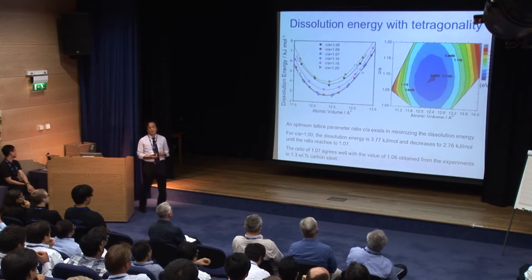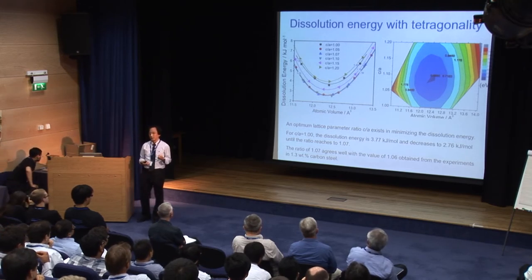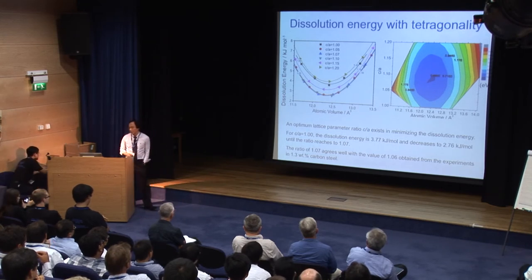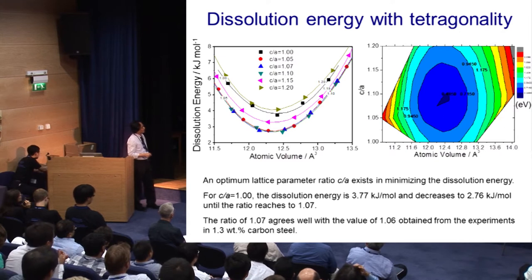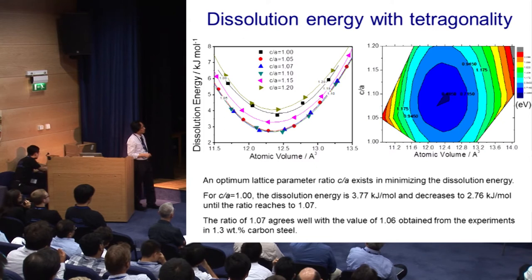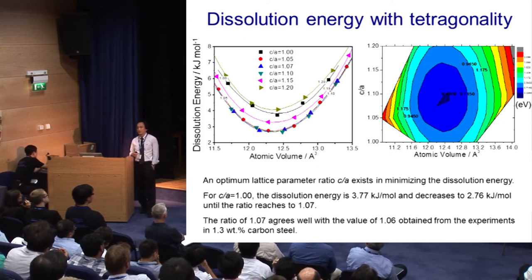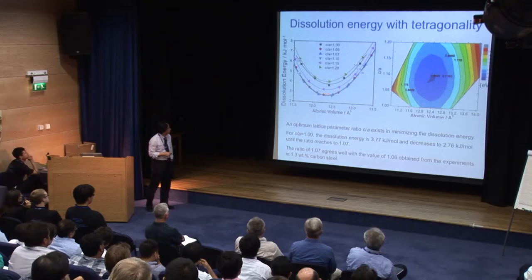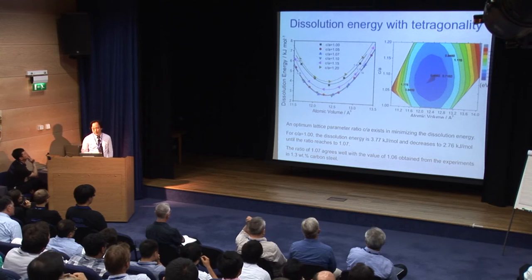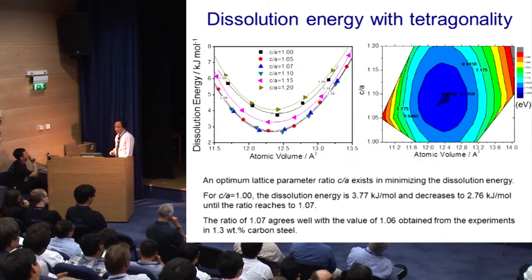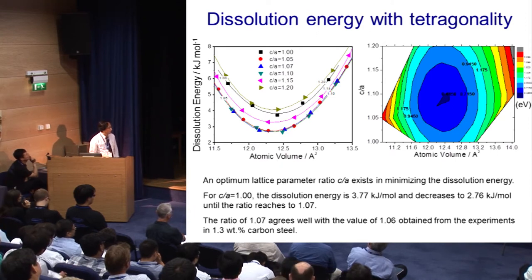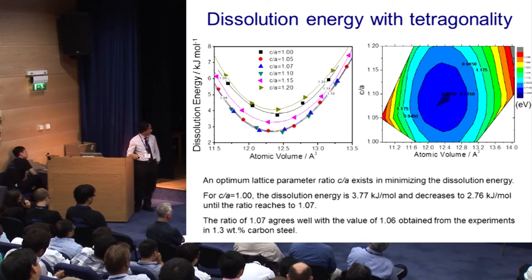We then calculated the dissolution energy as we varied the c/a ratio, representing tetragonality. When we increase the c/a ratio, the dissolution energy of carbon gradually decreases and reaches its minimum at an optimum c/a ratio of 1.07. Further increasing tetragonality causes the dissolution energy to rise again. At the optimum c/a of 1.07, the dissolution energy of carbon into ferrite decreases by 1 kJ/mol, and this optimum c/a value matches well with the reported value of 1.06 at 1.38 at% carbon.